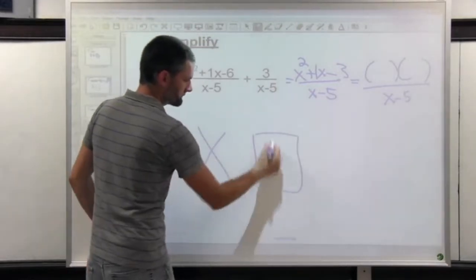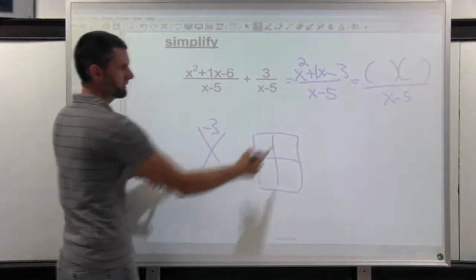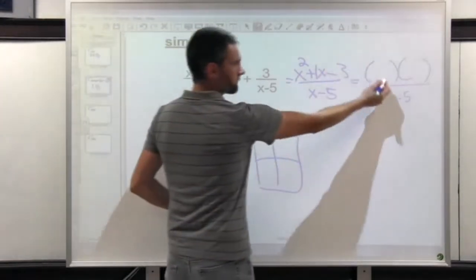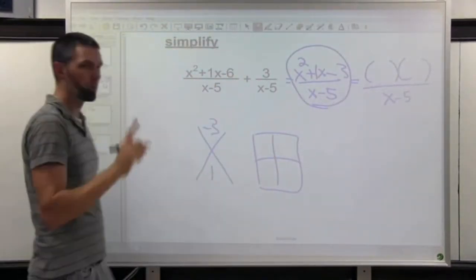So take an x in a box, try to factor the top. Negative 3 and 1 are the two numbers. I can't think of two numbers that work, so that means we can't break it up. This is as reduced or simplified as possible.